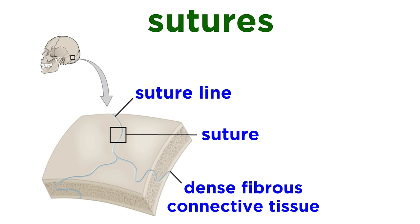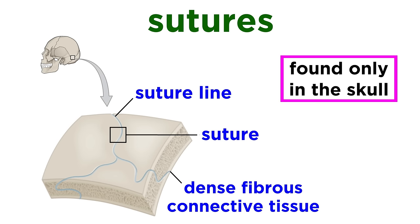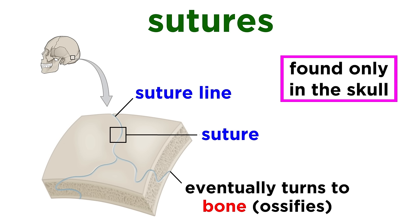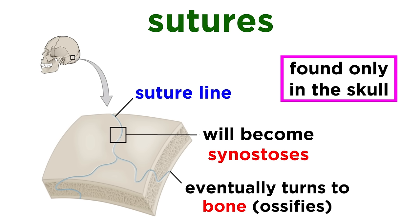We talked about sutures when we looked at the skull, and this is the only place we will find them. They contain many interlocking fibers of connective tissue that are connected to the periosteum of each bone, allowing them to tightly interlock. This tissue eventually turns into bone, or ossifies, so that by middle age the skull bones are all fused together, at which point the sutures become synostoses.